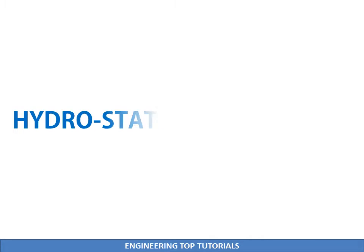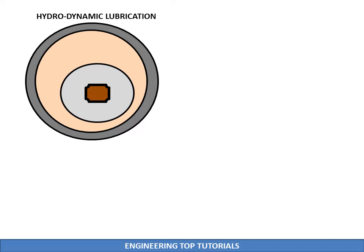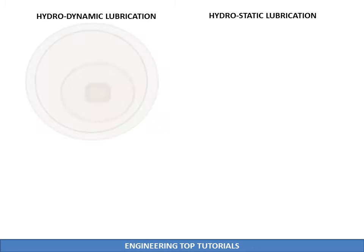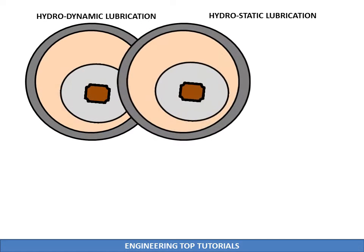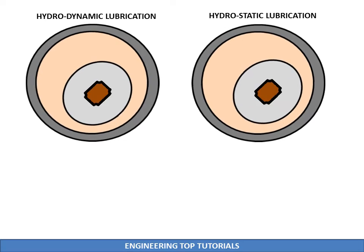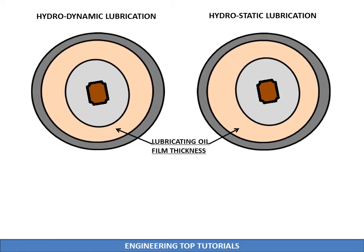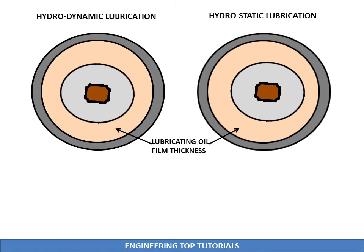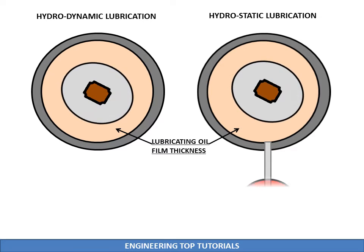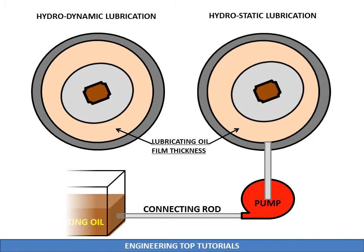So basically, what is hydrostatic lubrication? Hydrostatic lubrication is essentially a form of hydrodynamic lubrication in which the metal surfaces are separated by a complete film of oil. But instead of being self-generated, the separating pressure in hydrostatic lubrication is supplied by an external oil pump.